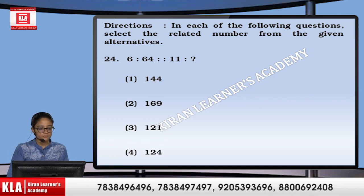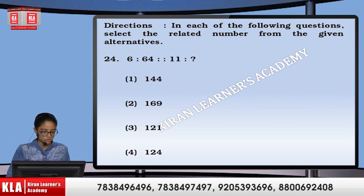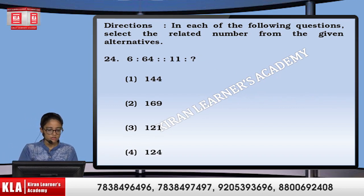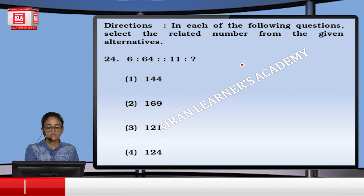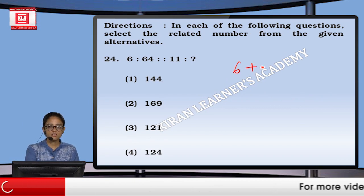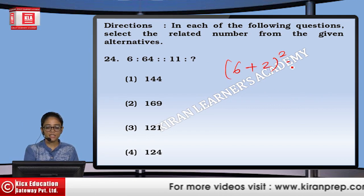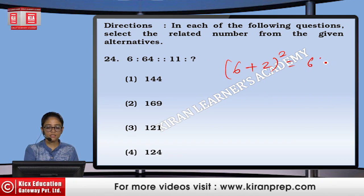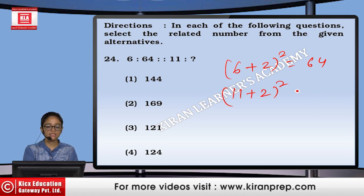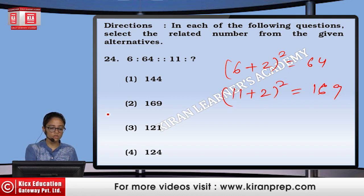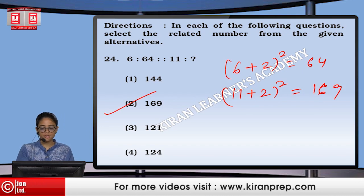Next, 6 is to 64. 6 plus 2 is 8 — if I do 8 squared, we get 64. Similarly, 11 plus 2 is 13, and 13 squared is 169. So the option will be the second one.